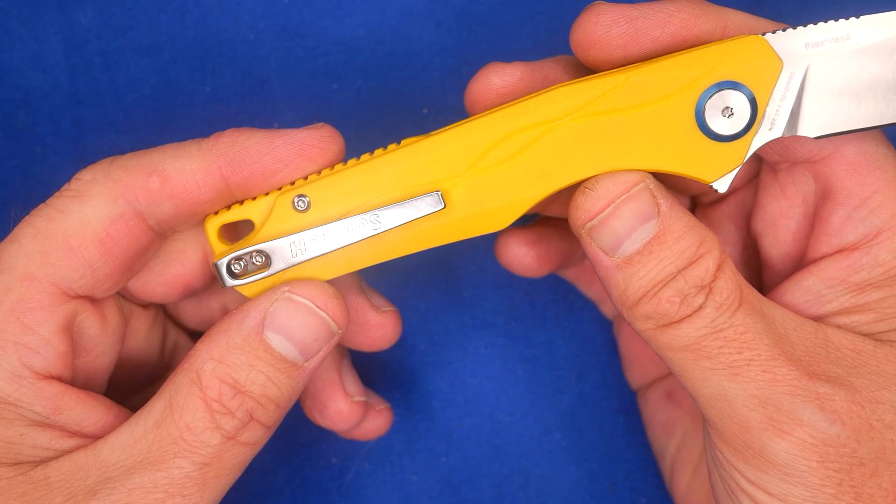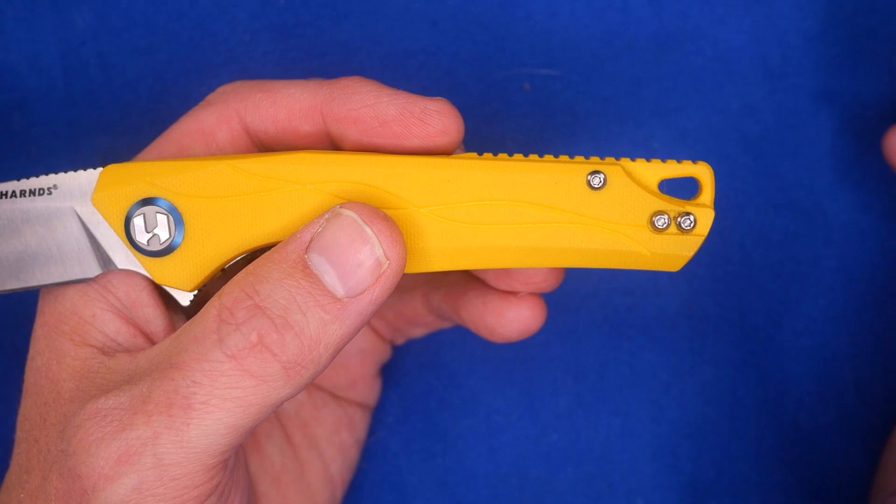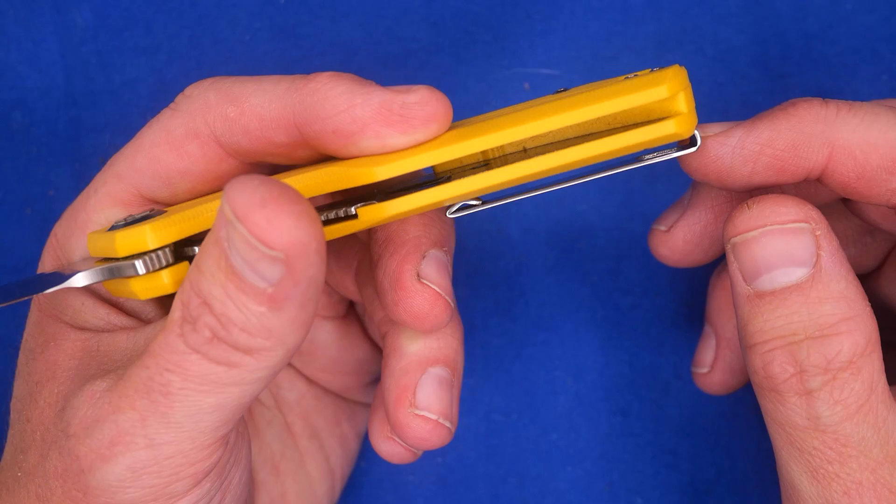We've got button screws, but I like that they aren't really sunk deep into the G10. If you're going to do button screws in G10, I prefer them more like this, where they're not sunk deep. They actually sit proud a little bit of the G10, so I like that.